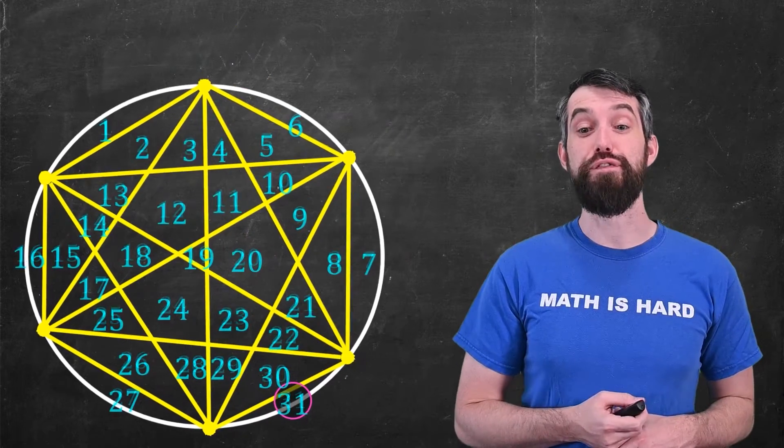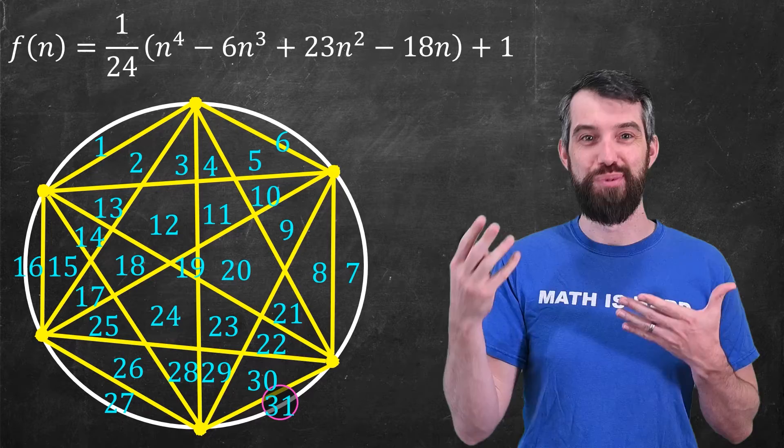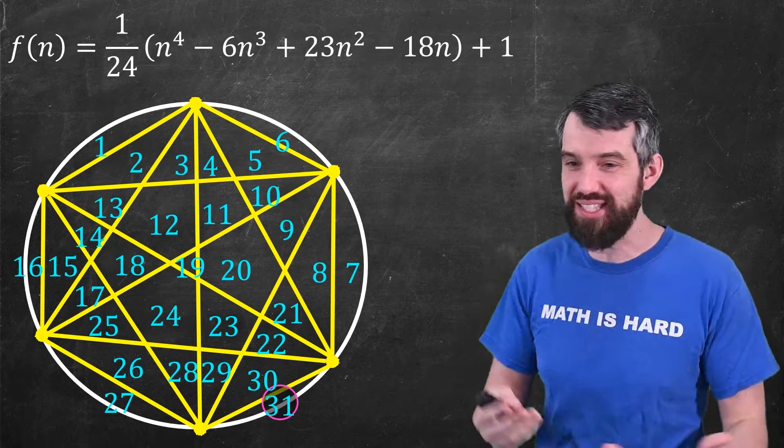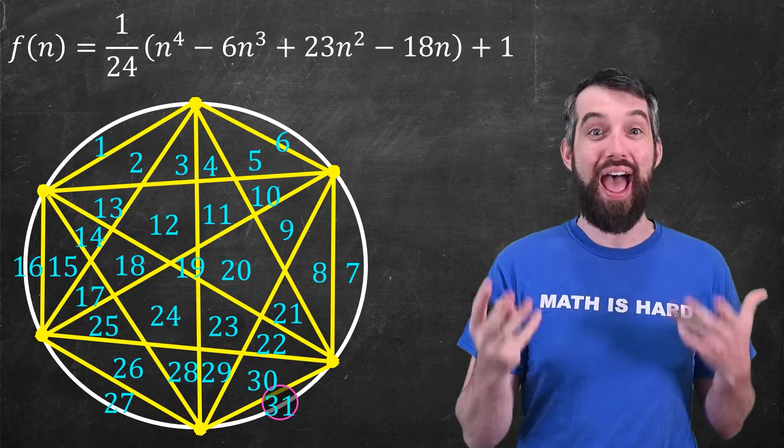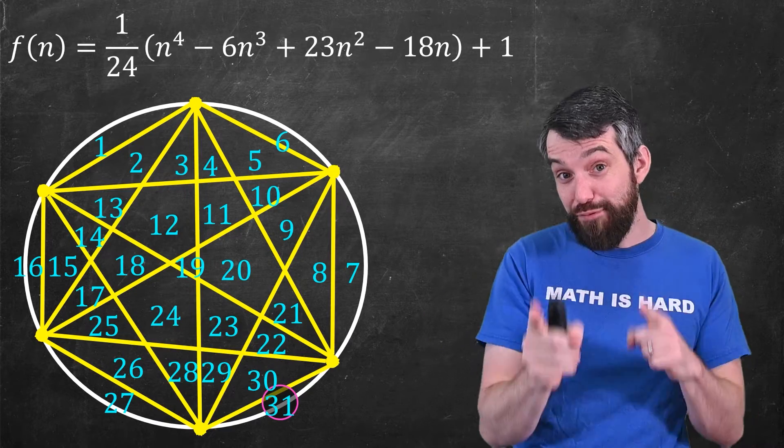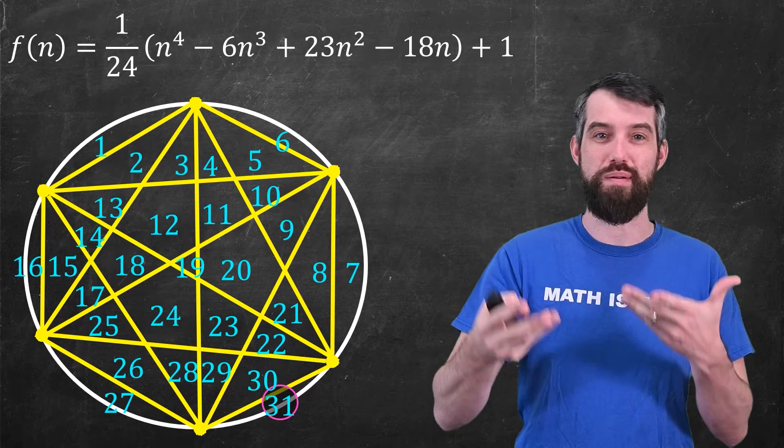There actually is a different formula for this question. The maximal number of regions when you put n dots is this weird quartic polynomial here, and there's many different proofs for that claim. But the point is, it's a different pattern than the much simpler 2 to the n minus 1 that you were probably expecting.